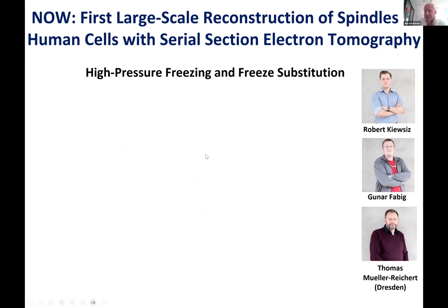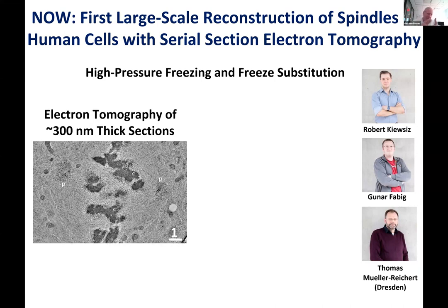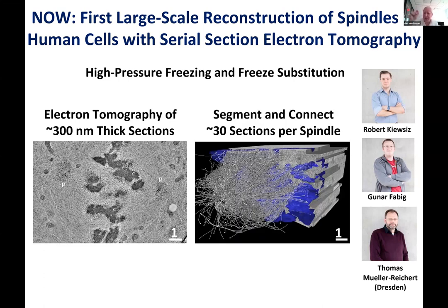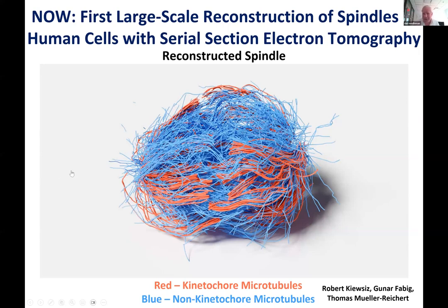They did the first large-scale, essentially total EM reconstruction of spindles in human cells by serial section electron tomography. They freeze human cells at high pressure, and while frozen, they switch the vitreous water for plastic. They cut the cell, now in plastic, into 300-nanometer-thick sections, do tomography on each section, and track the microtubules totally in each section. They then do roughly 30 of these sections consecutively and stitch all the microtubules together, yielding a total EM reconstruction of the entire spindle.